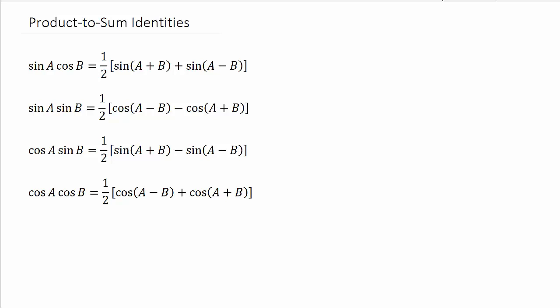All right, so let's look at an example where we have to use the product to sum identities to find the exact value of a trig function. In this case you have two trig functions multiplied together, but the two trig functions, their angles are different. So we can use these product to sum identities to simplify them.